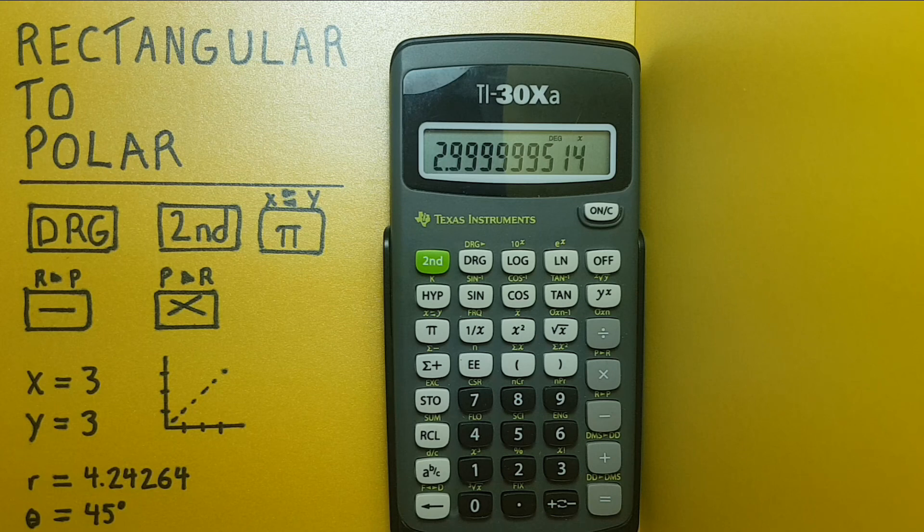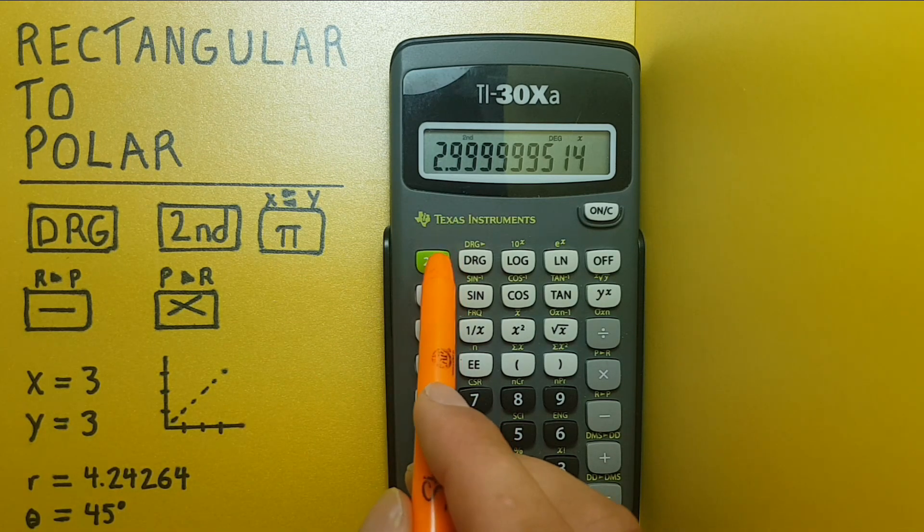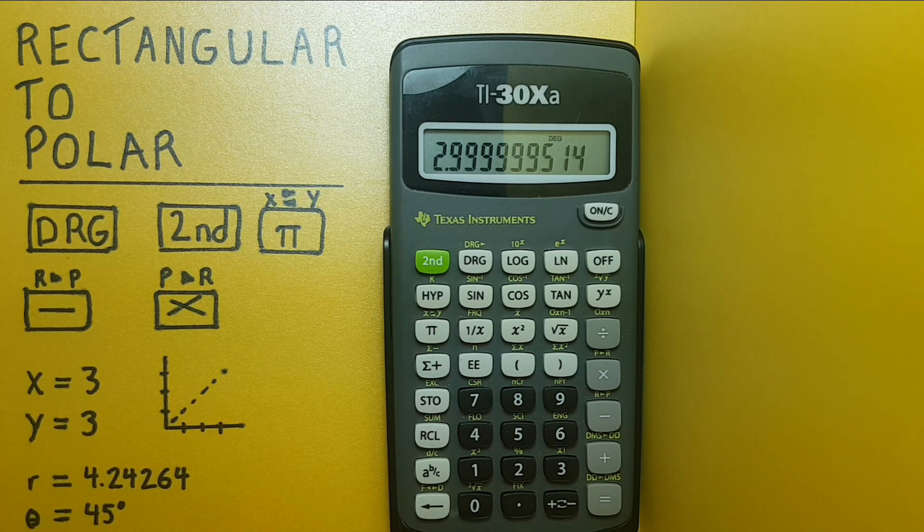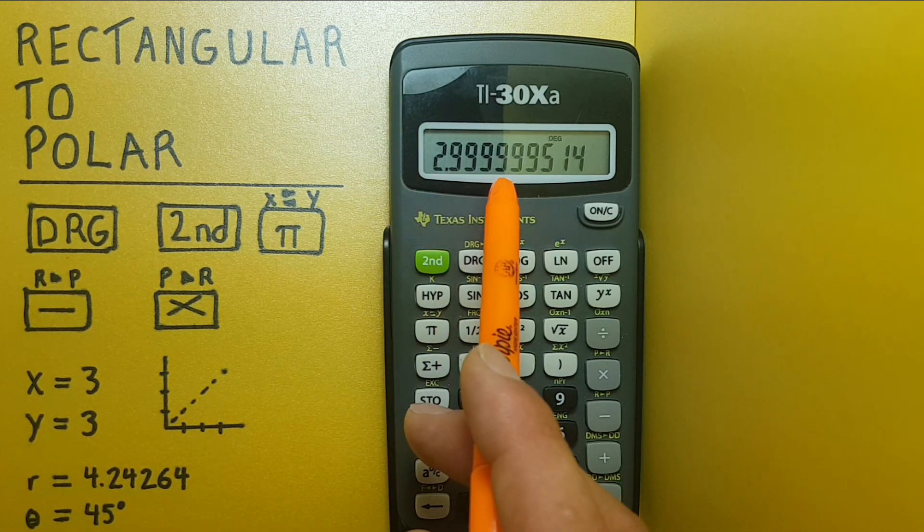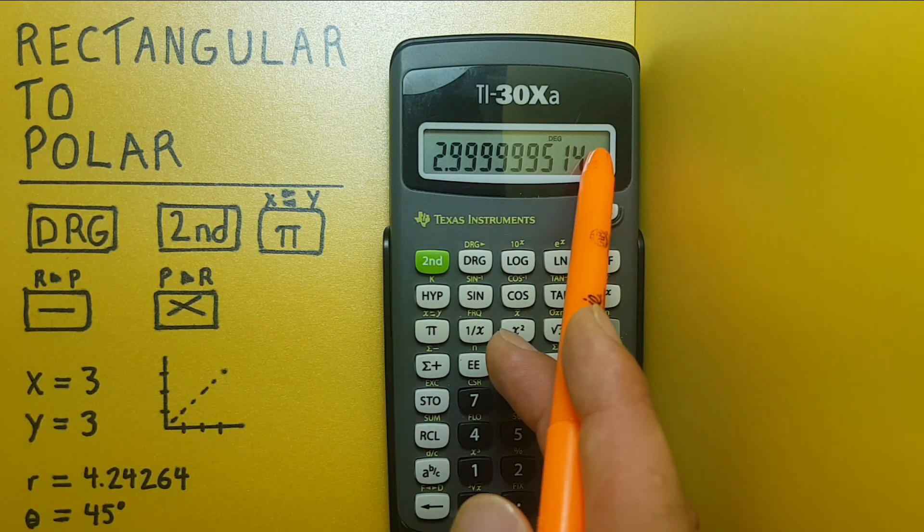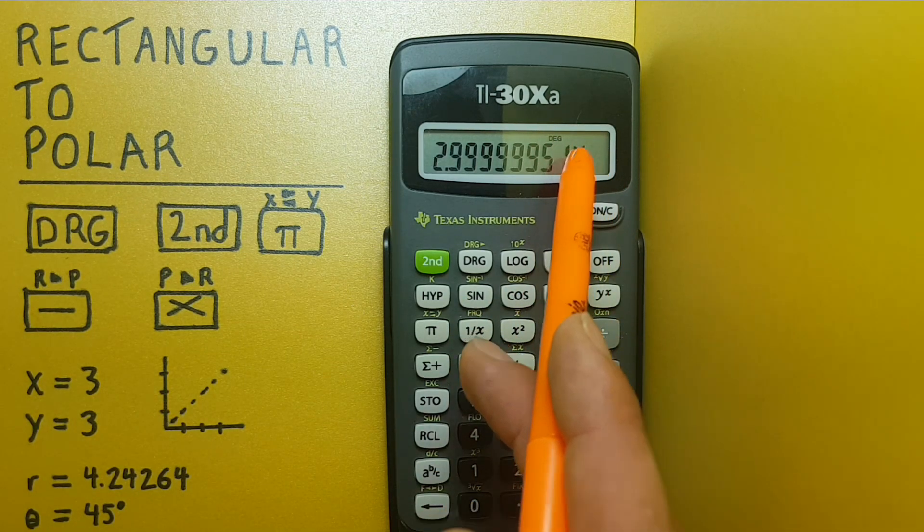And to get our y value, we go second function, pi again. And again, we get 2.99999, etc. Notice the x isn't in the top corner this time, letting us know this is our y value.